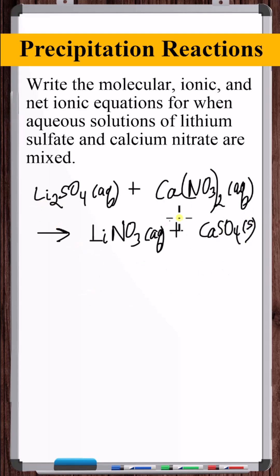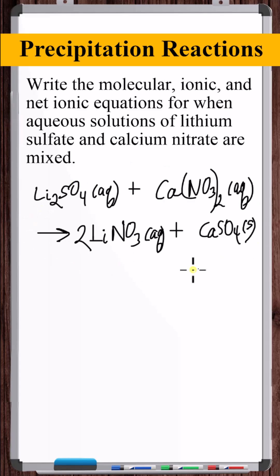We're not done — we need to balance this. There are two lithiums on the reactant side but one on the product side, so we place a coefficient of two in front of LiNO₃. This gives us the completed molecular equation.